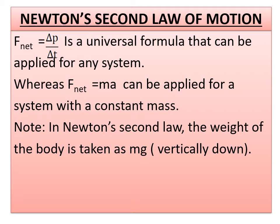This is also one of the important formulas whereas if you go with the next equation, F_net is equal to MA can be applied for a system with a constant mass. On the whole what you have to remember is sometimes momentum is given then you have to use F_net is equal to delta P by delta T. If mass and acceleration is given then you have to use the formula F is equal to MA.